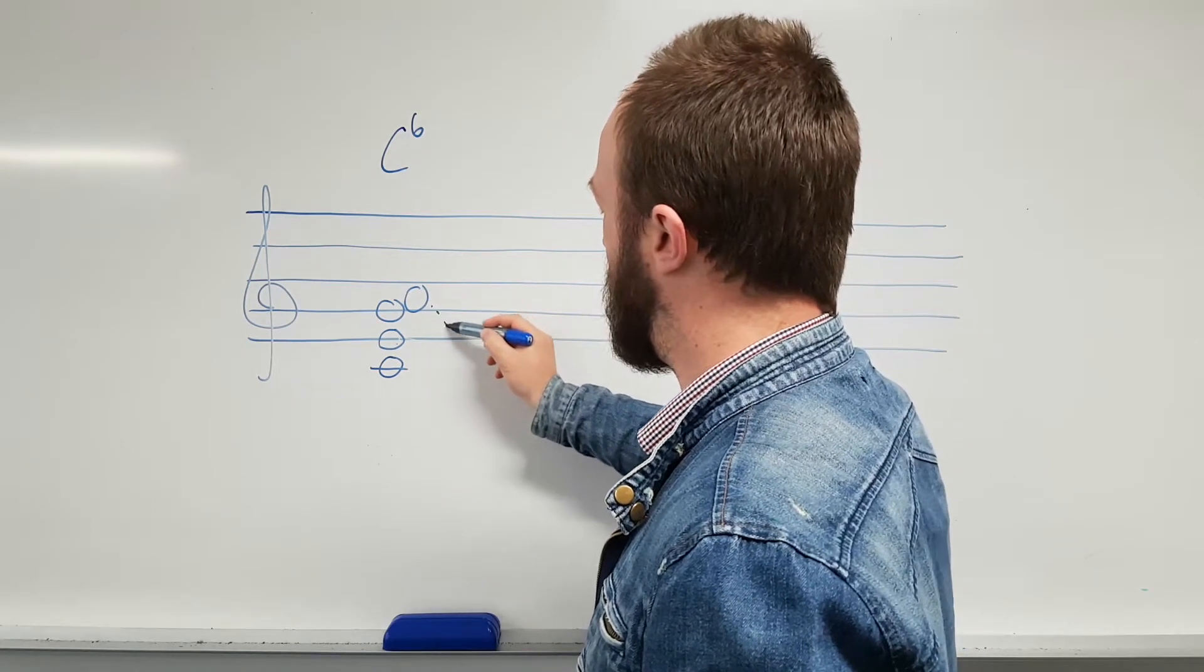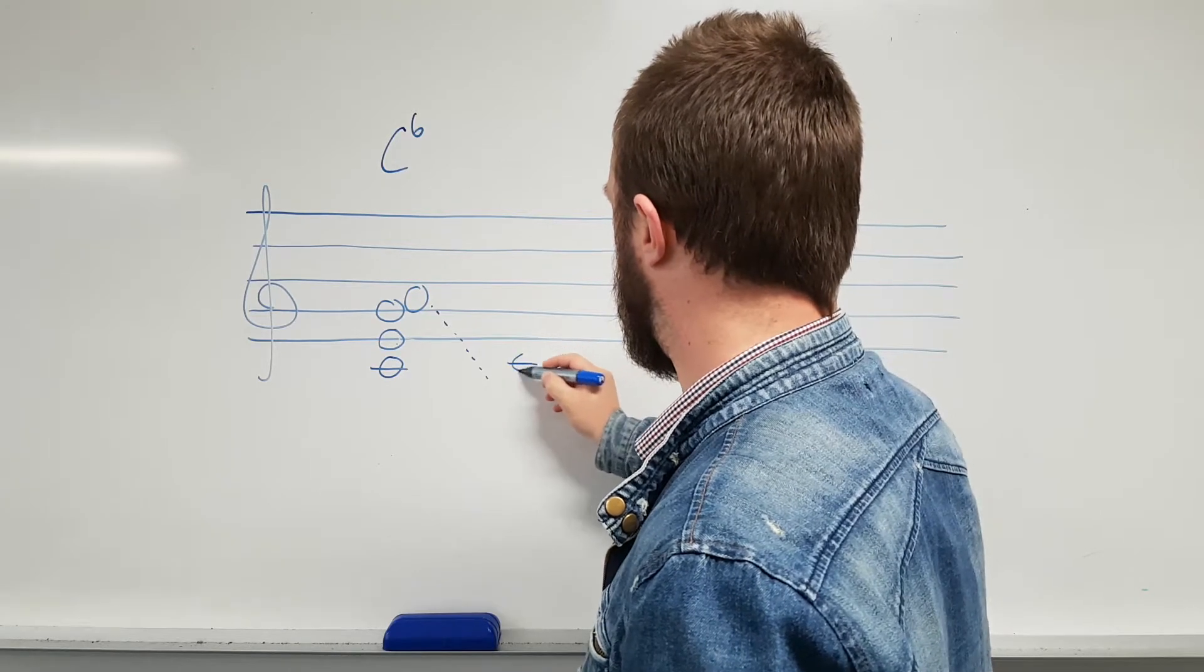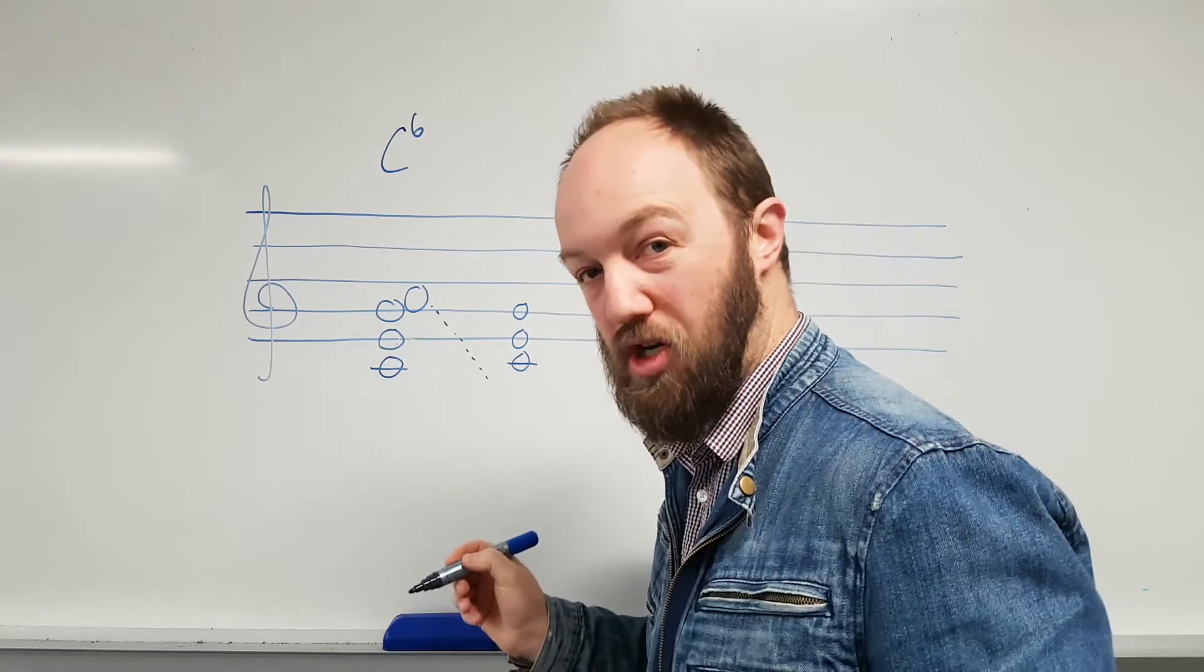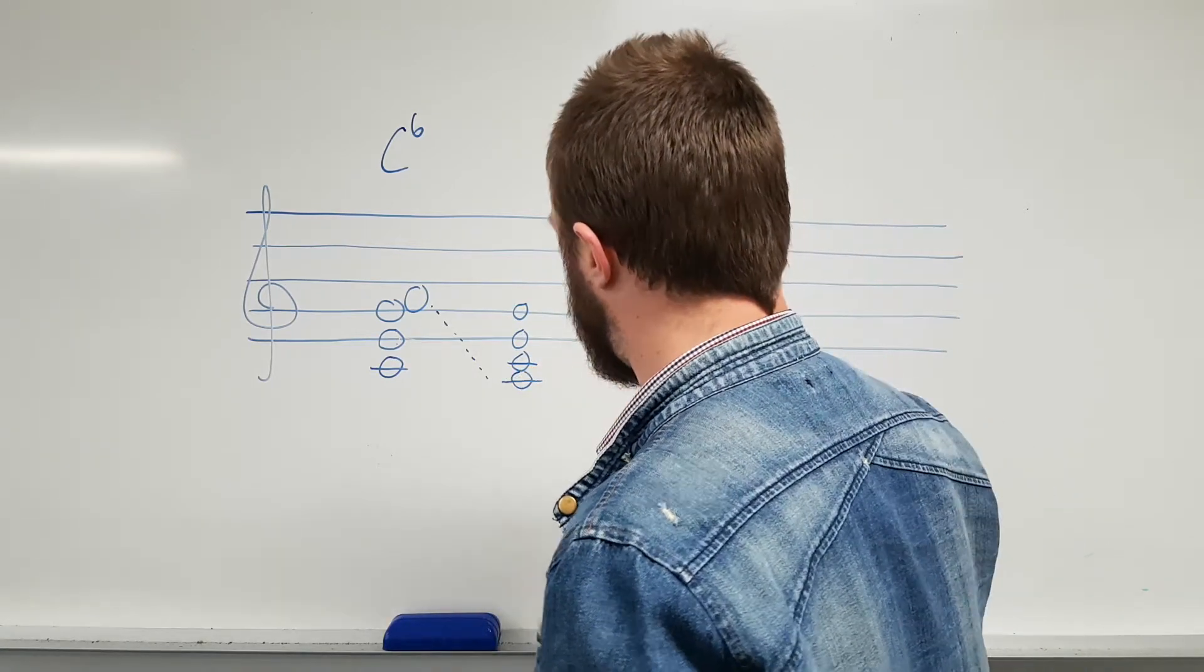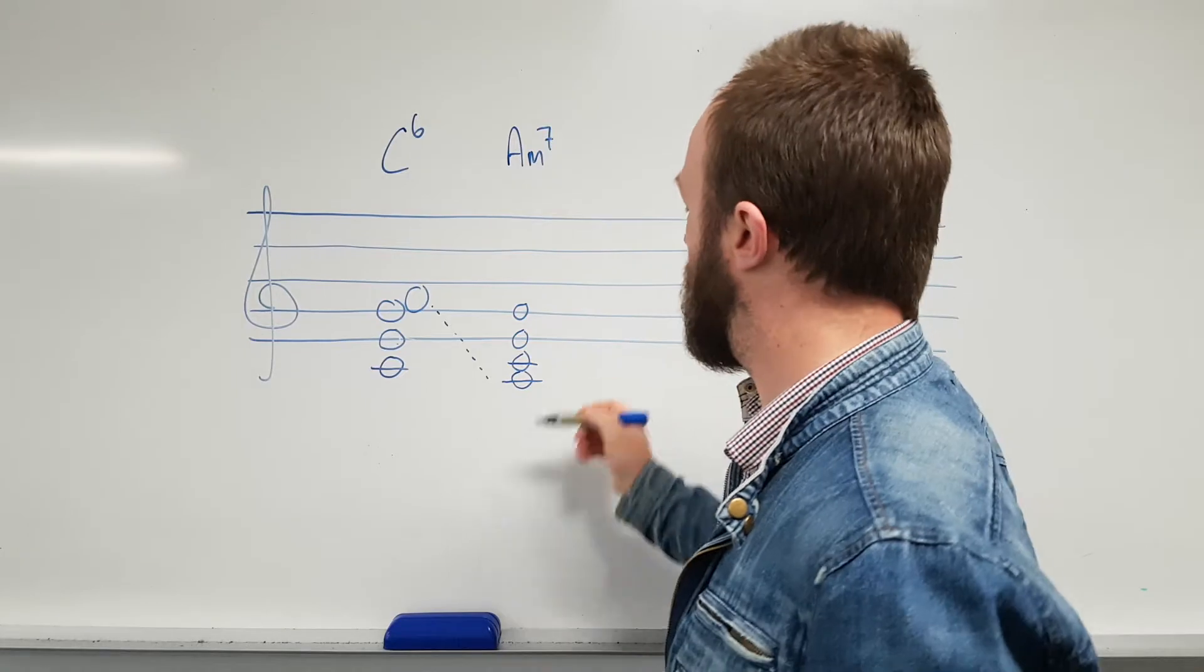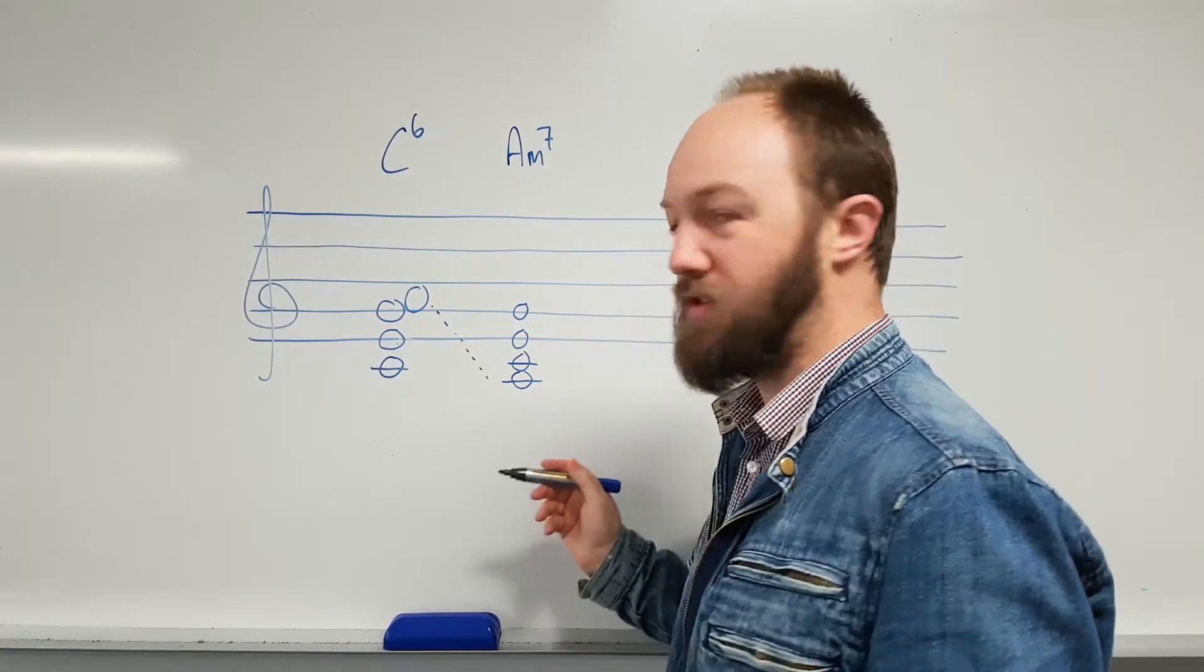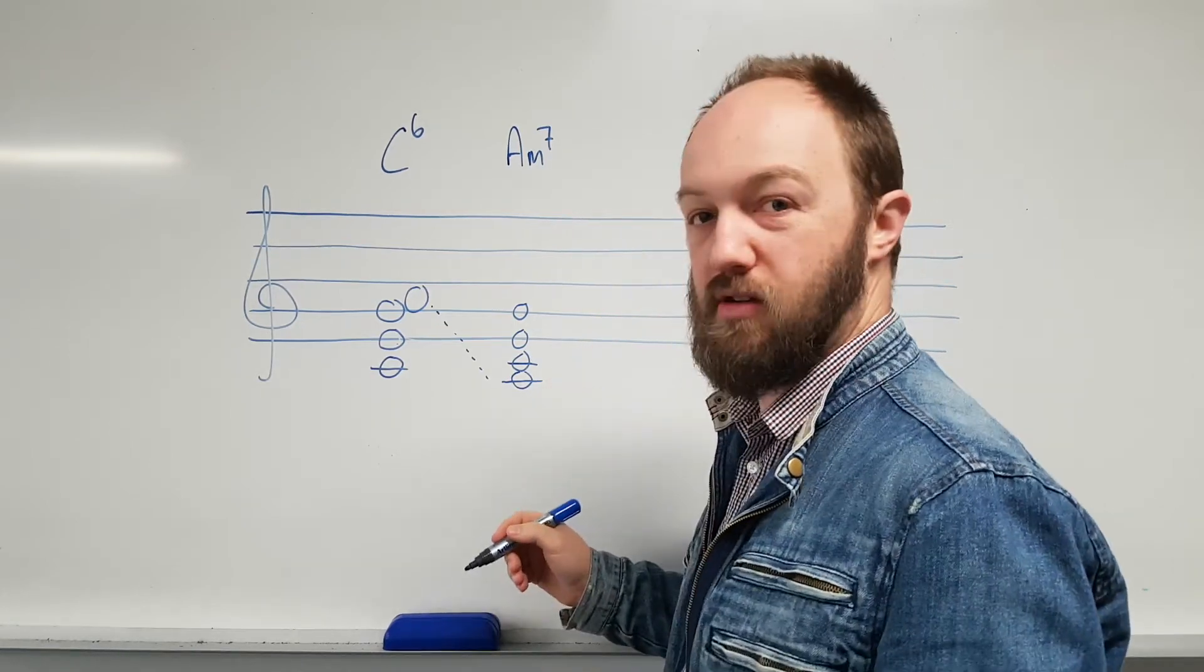...and put it, so we've still got our C major chord here, but this time instead of the A being on top, it's on the bottom, we now have an A minor seven chord: A, C, E, and G. So that is a stacked thirds triad.